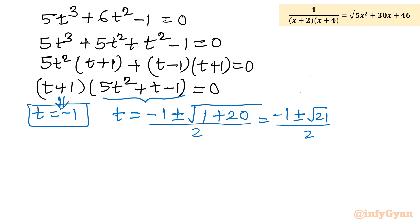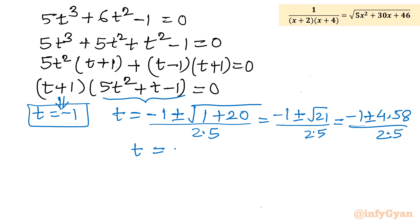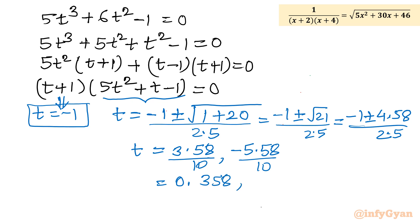Since √21 ≈ 4.58, the two values from the quadratic are t = (−1 + 4.58)/10 ≈ 0.358 and t = (−1 − 4.58)/10 ≈ −0.558. So the three t values to back-substitute are t = −1, t ≈ 0.358, and t ≈ −0.558.